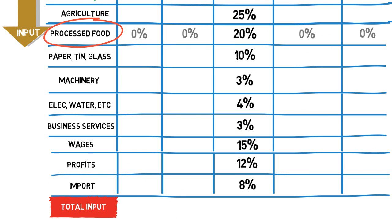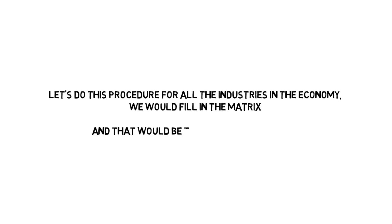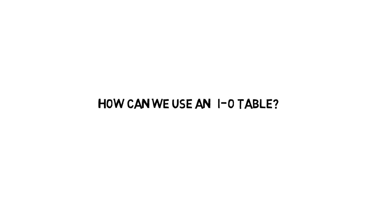The last step is simply to recognize that if we did this procedure for all the industries in the economy, we would fill in the matrix. And that would be the input-output table. Okay, that's what they are. Now how can we use an input-output table?